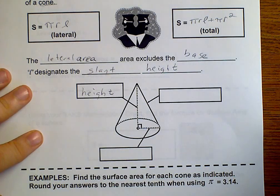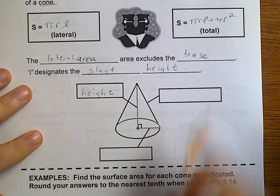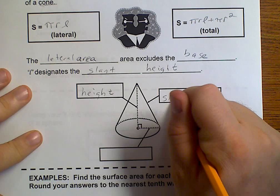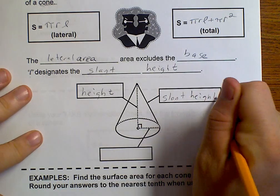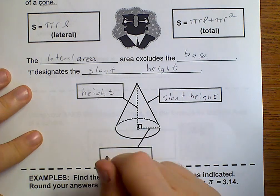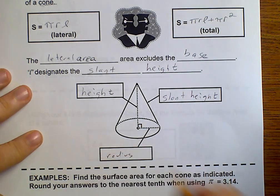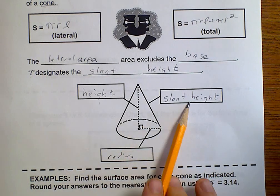However, if we draw a straight line from the edge of the circle to the vertex, we call this the slant height. And the radius of our circle is still the radius. So height, slant height, and radius.